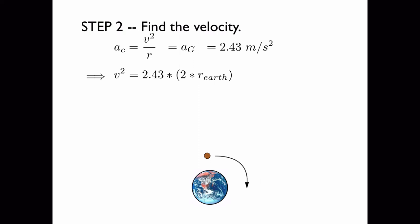And therefore, after multiplying both sides by r which is two times the radius of the Earth, we get that v squared is equal to 3.1 times 10 to the 7.